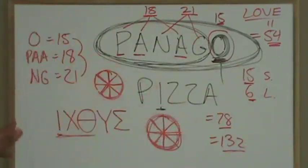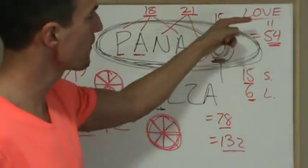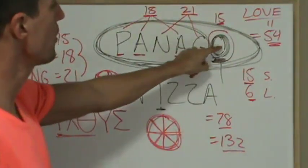Here's our lightning review of Panago Pizza to the glory of the Triune God. Panago adds to LOVE perfectly, ending in O, which is 15.